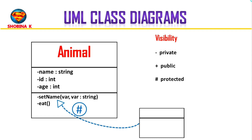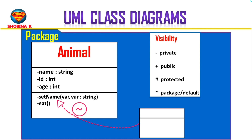Next is the hash symbol, which means an attribute or method is protected — they can only be accessed by the same class or its subclasses. And finally there is the tilde, which sets the visibility to package or default, meaning it can be used by any other classes as long as they are in the same package. But this is rarely used. In most cases, your attributes are going to be private or protected, and methods are often public.